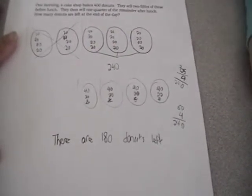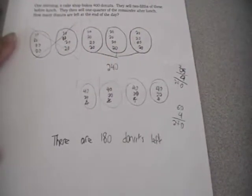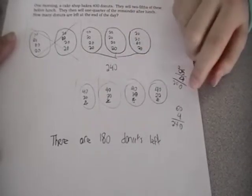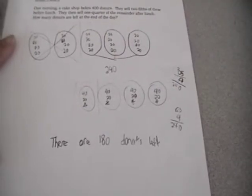And then they said they sold one quarter, so I took away that one quarter of the groups. These three were left because they sold that one quarter. And then that's 180, all three of these added together.